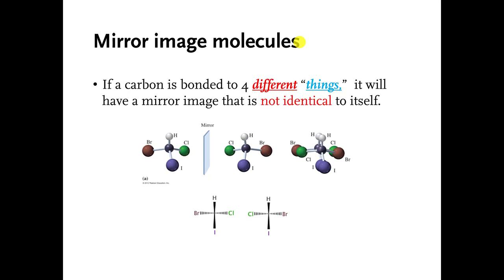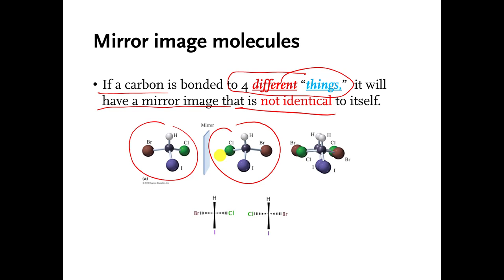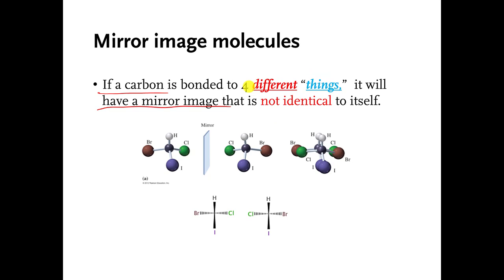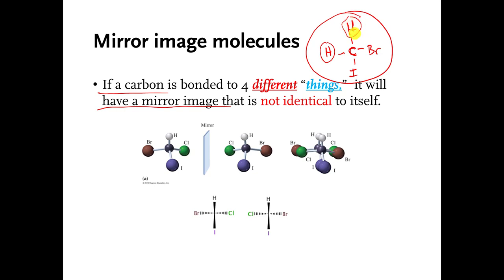The thing that gives you a stereoisomer with organic molecules is you have to have four different things attached to a carbon in the center. If the carbon is bonded to four different things, it will have a mirror image that is not identical to itself. If it has fewer than four different things, its mirror image will be identical to itself. On a quiz or test, if I show you a molecule and ask if it has a stereoisomer, you look at the central carbon and ask: does it have four different things attached? In this case the answer is no, because there are two hydrogens attached, and they are the same thing — so the central carbon is not chiral.